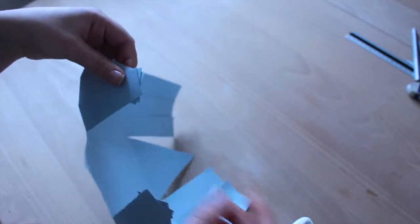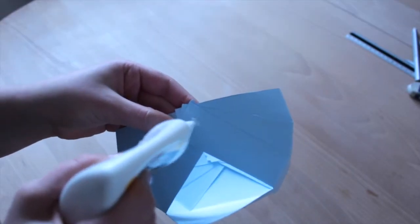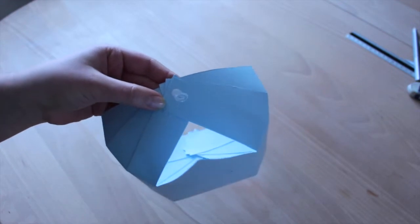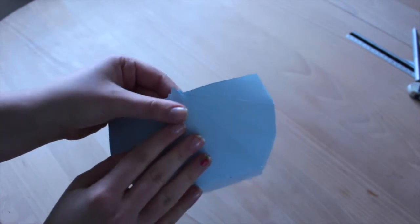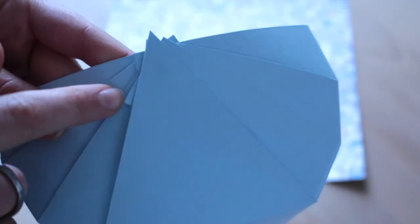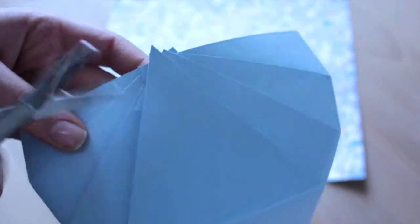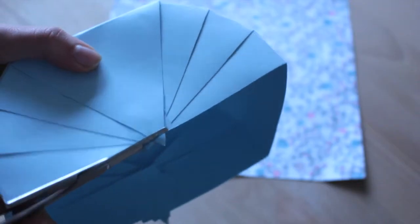Now we need to connect these strips together, so put some glue on one of them and connect them. Then put some glue on the connected strips and glue the last piece onto it. If you have these outsiders, just cut them off to make it prettier and easier to glue the final piece onto it.